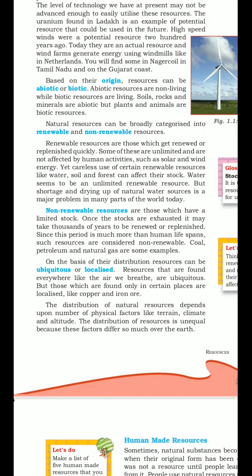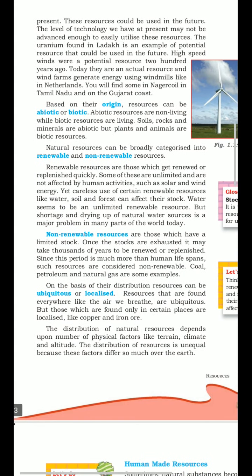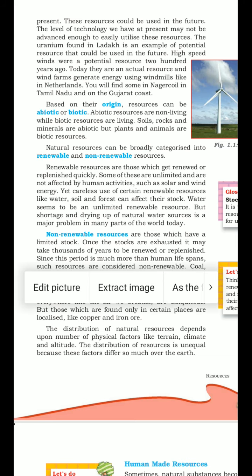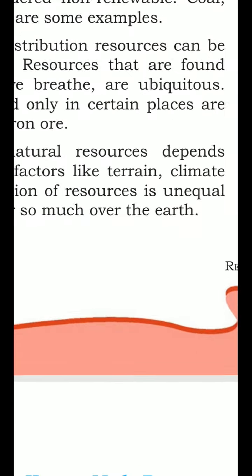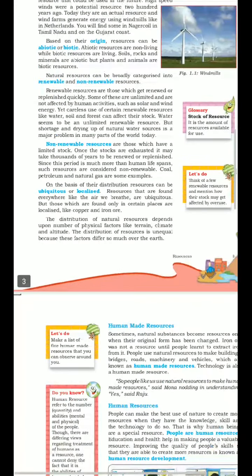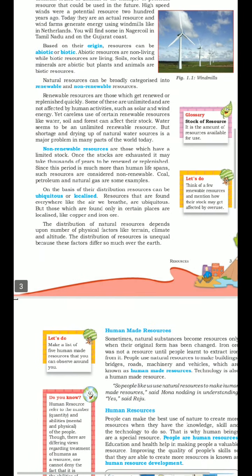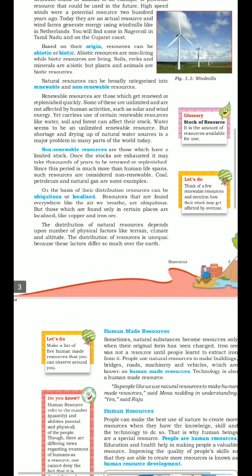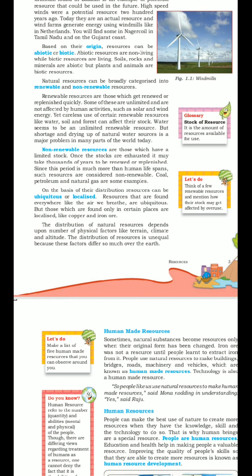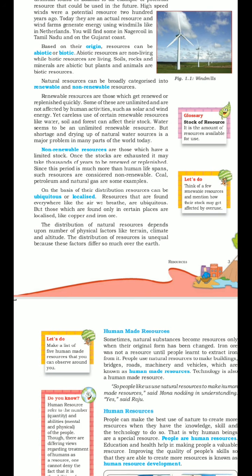Natural resources can be categorized into renewable and non-renewable resources. Renewable resources are those resources which get renewed or replenished quickly. Renewed means starting something again after an interruption. Examples of renewable resources are solar energy, wind, etc. However, careless use of certain renewable resources like water, soil and forests can affect their stock.